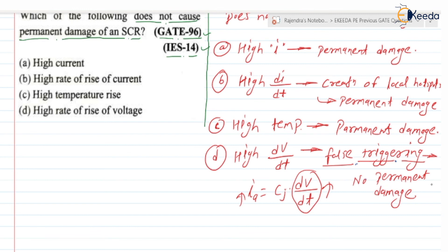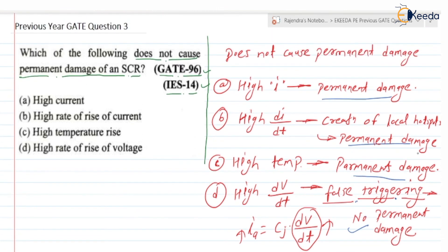Out of these four options, the first causes permanent damage, the second causes permanent damage, the third causes permanent damage, but the fourth does not cause permanent damage. Since the question asks which does NOT cause permanent damage, the correct option is option D. This question was asked in GATE 96 and IES 2014 examination. In the next video we will discuss previous year GATE question number four. Thank you.